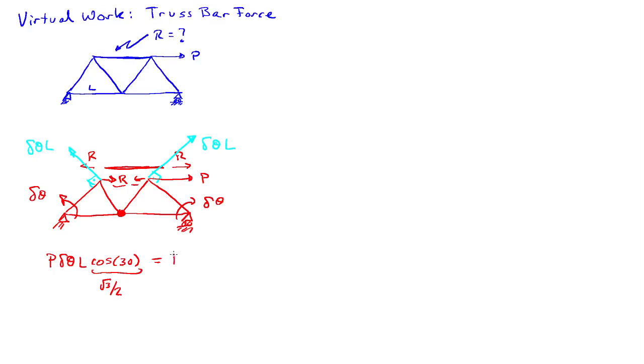So from one side, I'm going to have R delta theta L, which is the magnitude, and then the cosine of the angles between the two vectors. So I'll have the cosine of 150 degrees. So that's this angle here. And then I'll have plus R delta theta L cosine again of 150 degrees.